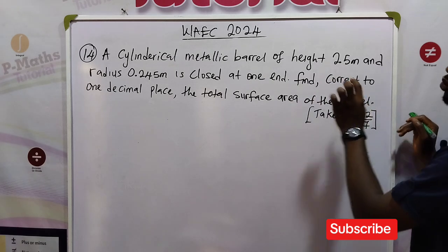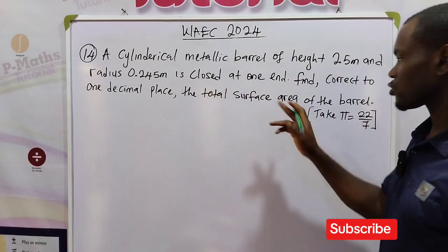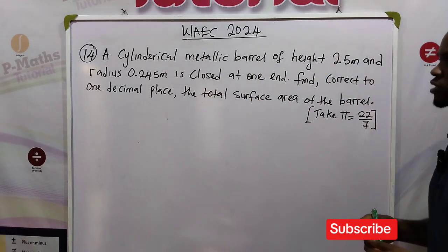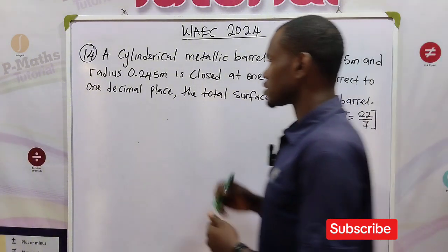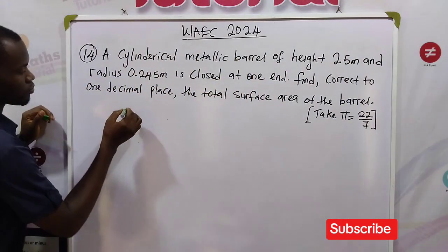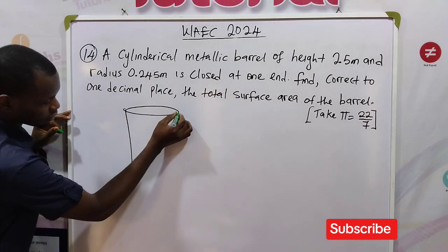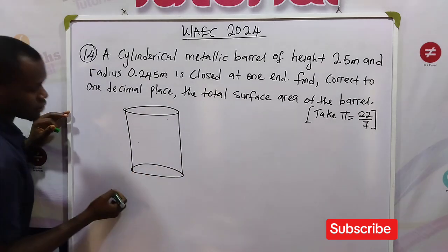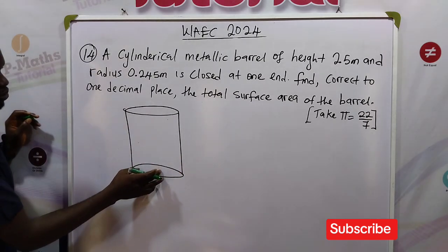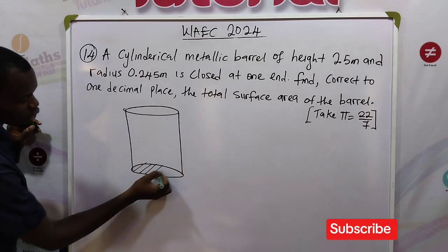Find, correct to one decimal place, the total surface area of the barrel. Let's represent this information in a diagram. We have a cylinder that will look like this, a cylindrical barrel with one end closed. Let this be the closed end of the cylinder.